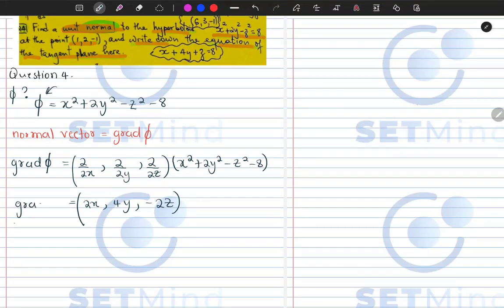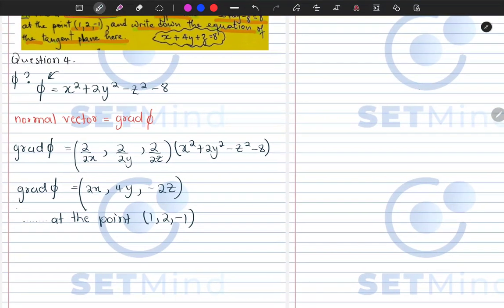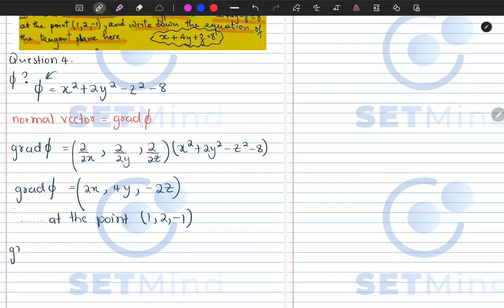So that is our gradient of phi. But when I look at the question, they further tell me that this is at the point (1, 2, -1). So meaning I need to evaluate my gradient at that point. So let's go ahead and do exactly that.